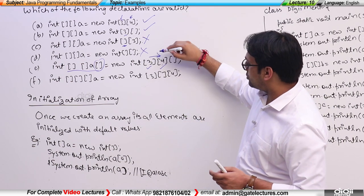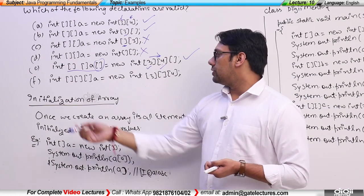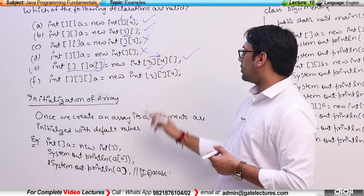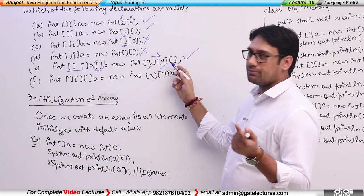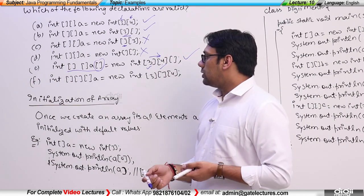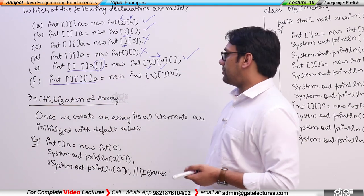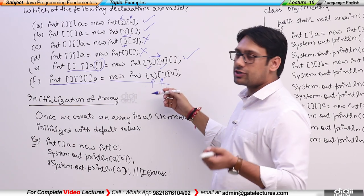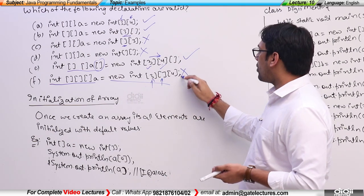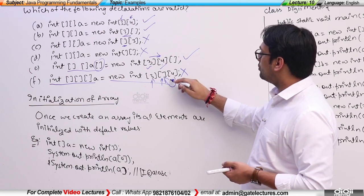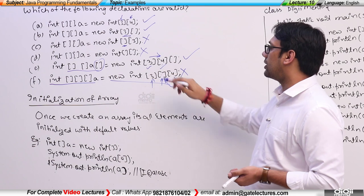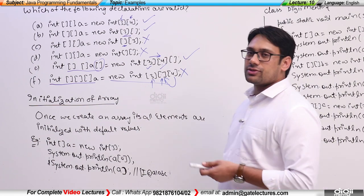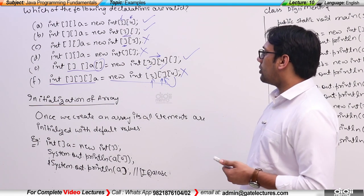We have to specify sizes in order — we cannot specify them randomly. Either specify all sizes or leave trailing ones unspecified. For example, specifying blocks and rows (but not columns) is valid, but specifying blocks and columns while skipping rows is not valid. Before specifying the number of columns, you must specify the number of rows. So you can clearly see what are the valid and invalid declarations of 3-dimensional arrays.